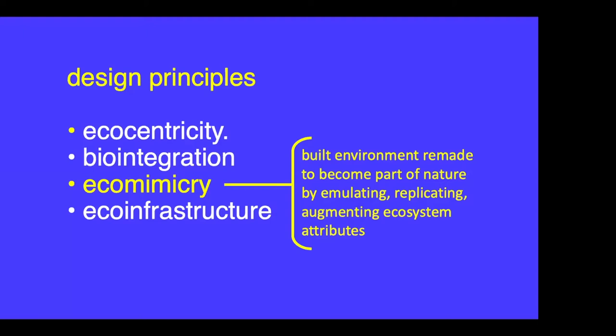For effective biointegration, the built environment must become part of nature — right now it is alienated from nature, separate and isolated. My thesis is that the built environment must become a human-made ecosystem. That leads me to the third point: eco-mimicry — our built environment needs to be remade to become part of nature. Mimicry means emulating, replicating, and augmenting ecosystem attributes into the built system. If we don't emulate ecosystems, we become alienated from nature, contaminating and radically changing the natural environment, affecting every aspect of our lives — the air, water, and land.